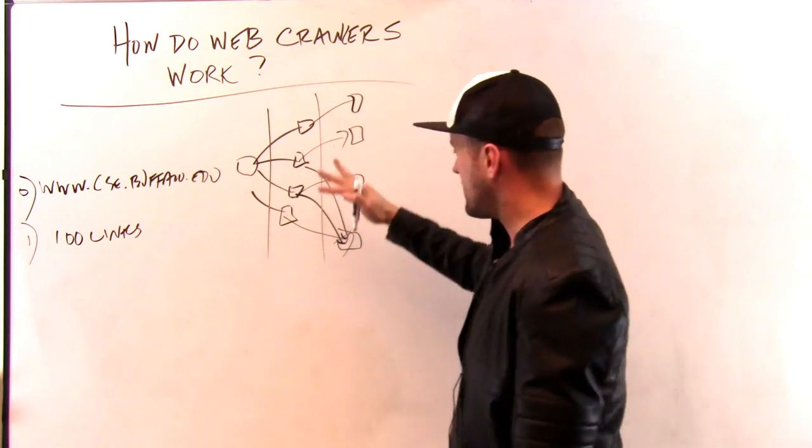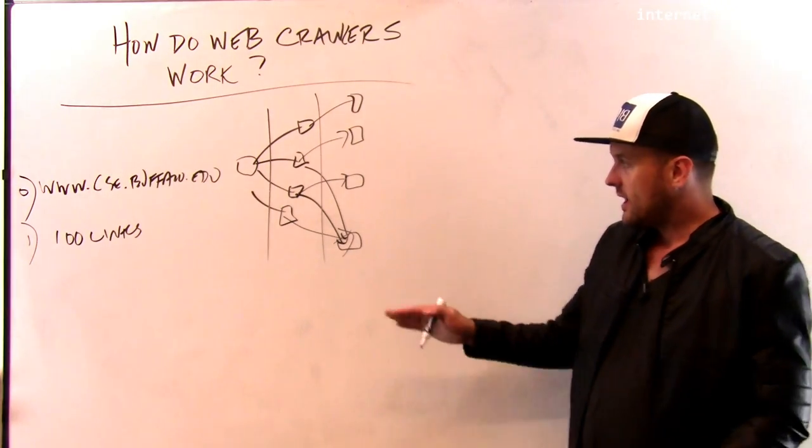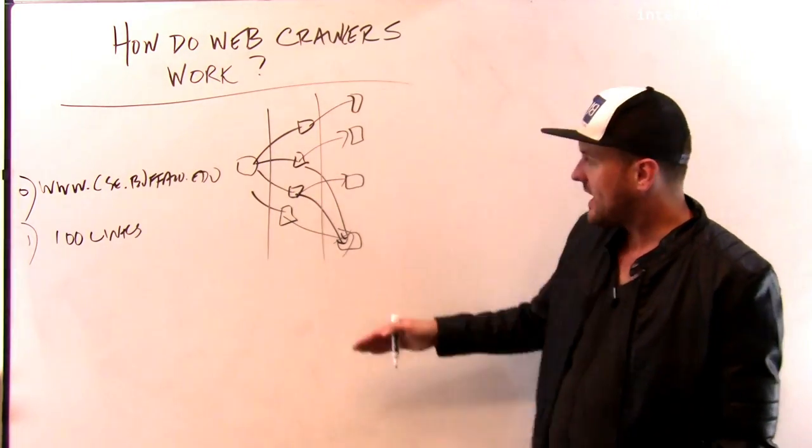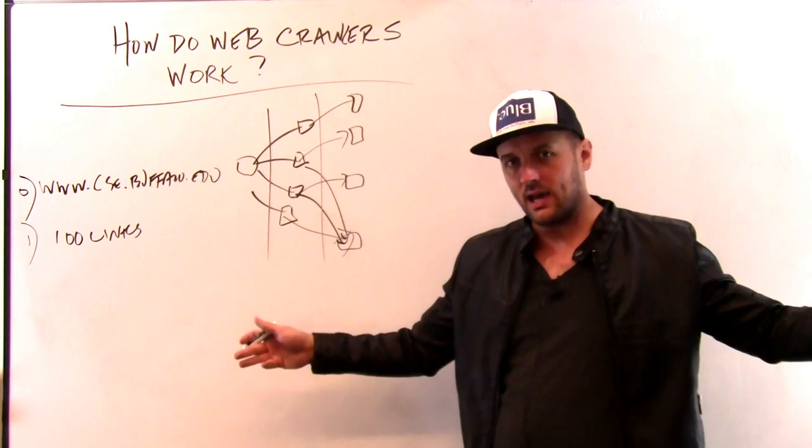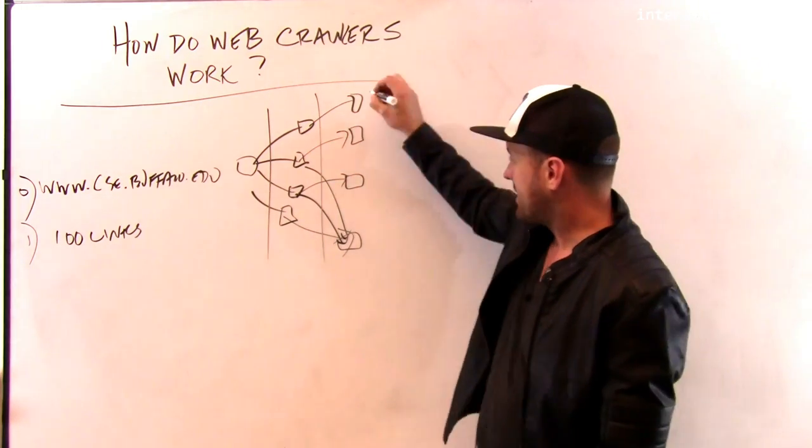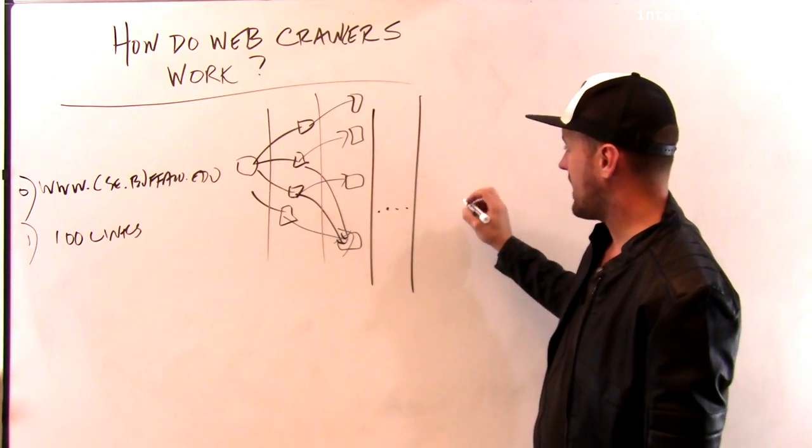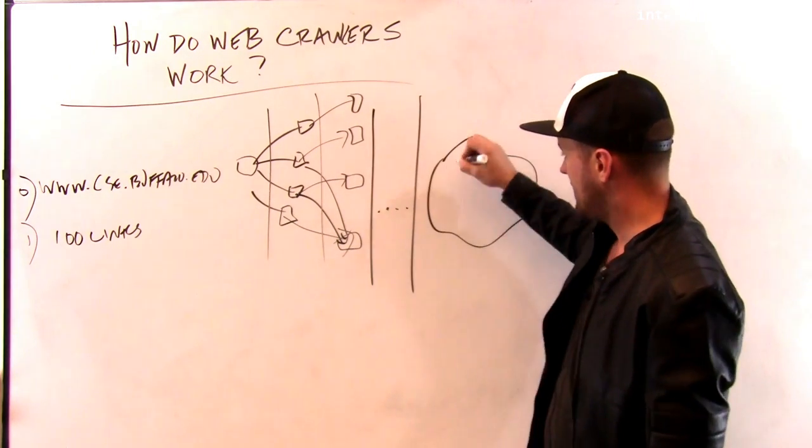But the idea is if I start at a particular point, I will eventually branch out and hopefully, at every stage, I'll have more and more pages to look at. I'll have more and more pages that link to other pages. And eventually, if I run this algorithm for a long period of time, I have the entire internet—the whole thing.